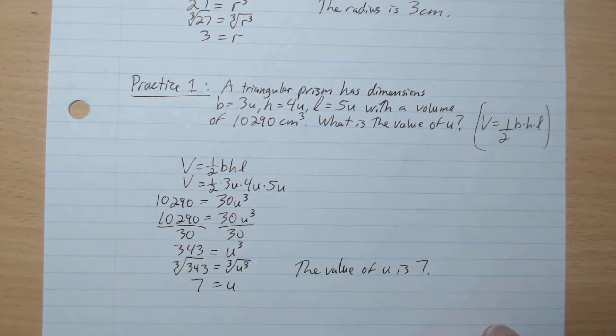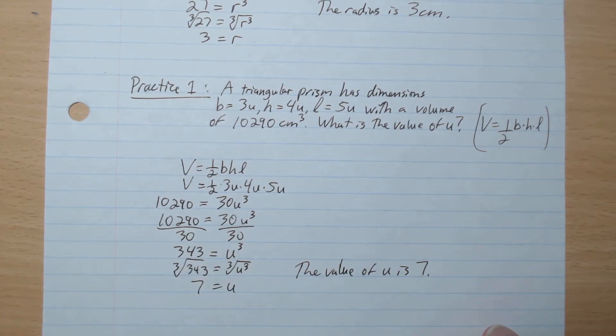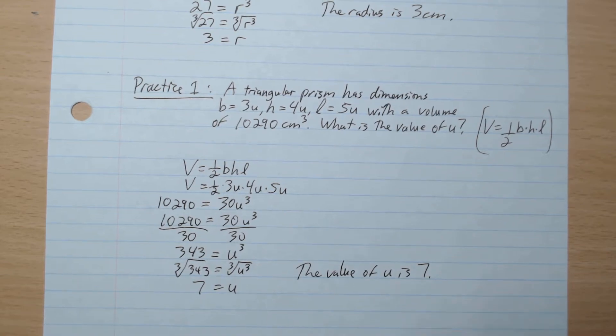So we want u³ on its own. Divide by 30 both sides. u³ equals 343. Cube root both sides. And we get u equals 7. So the value of u is 7.